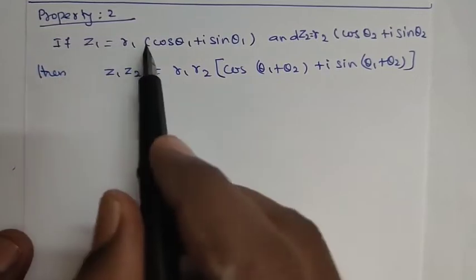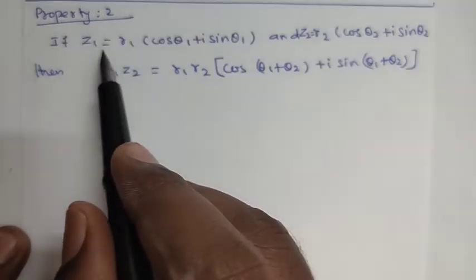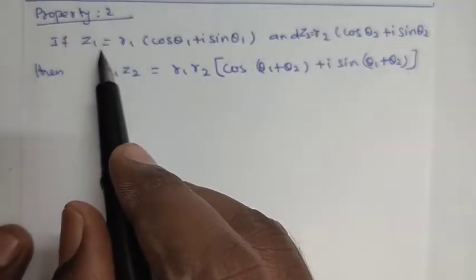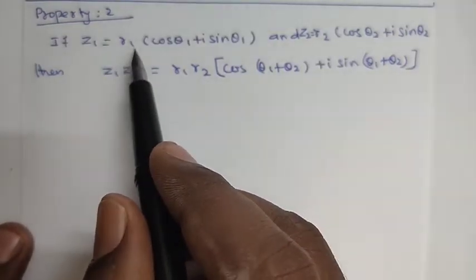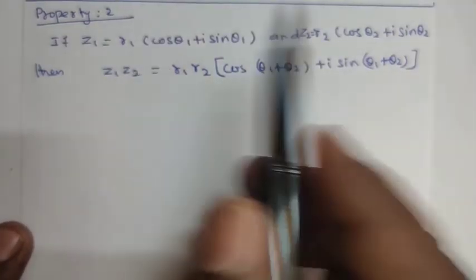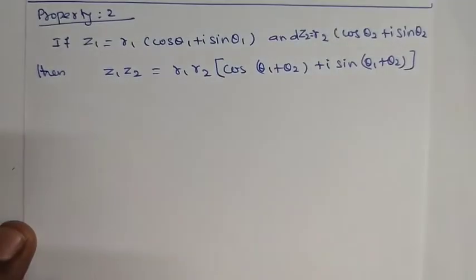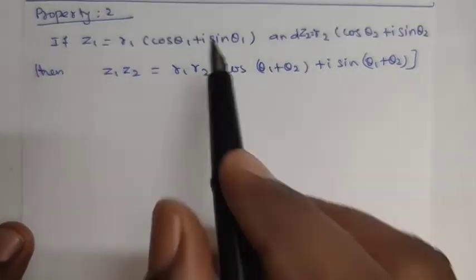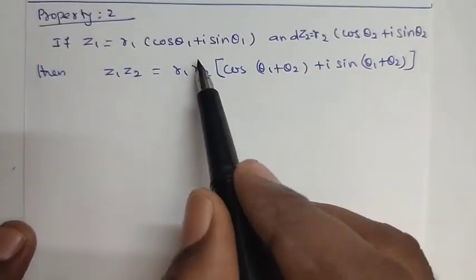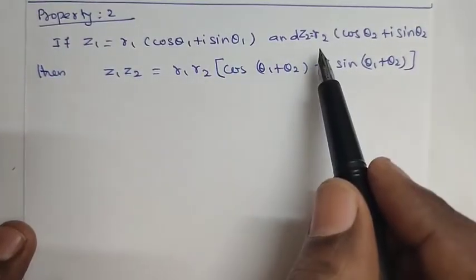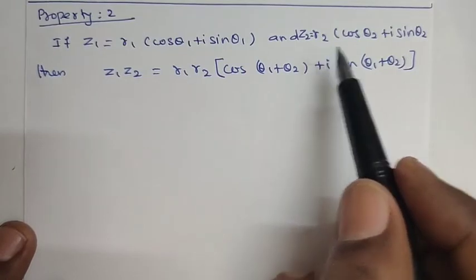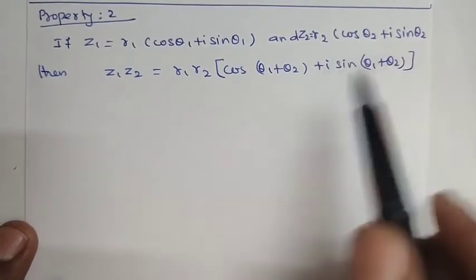Property number 2: if z1 is equal to r1 into cos θ1 plus i sin θ1, and z2 is equal to r2 into cos θ2 plus i sin θ2.